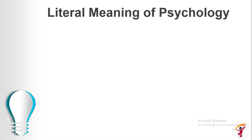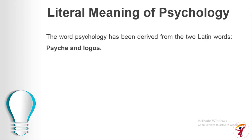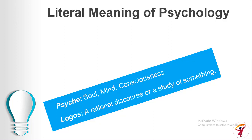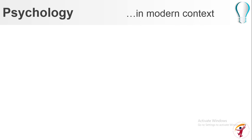What is the literal meaning of psychology? The word psychology has been derived from two Latin words: psyche and logos. Psyche means soul, mind, or consciousness, and logos means a rational discourse or study of something. So psychology is a rational discourse or study of our mind — be it of human or animal.